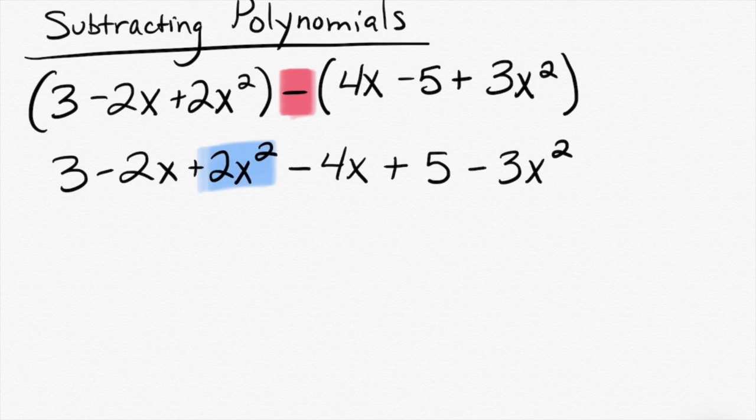Do we have anything else in the problem that is also degree 2 with a base of x? Negative 3x squared. Negative 3x squared. There we go.